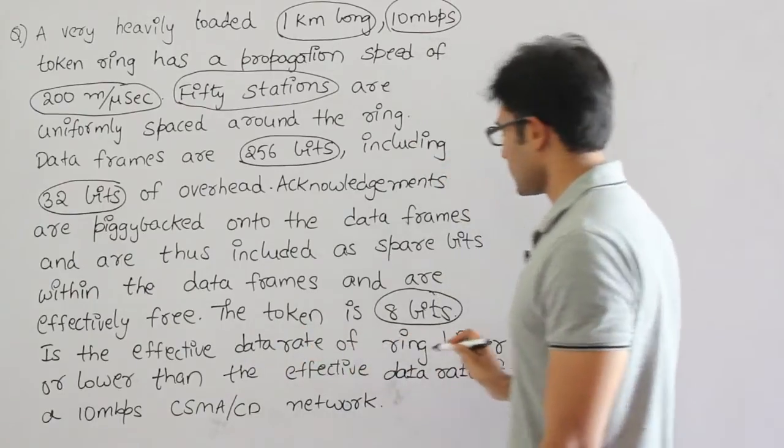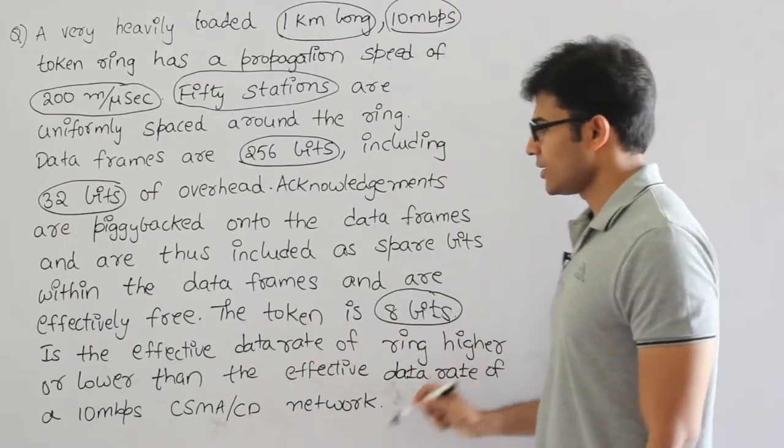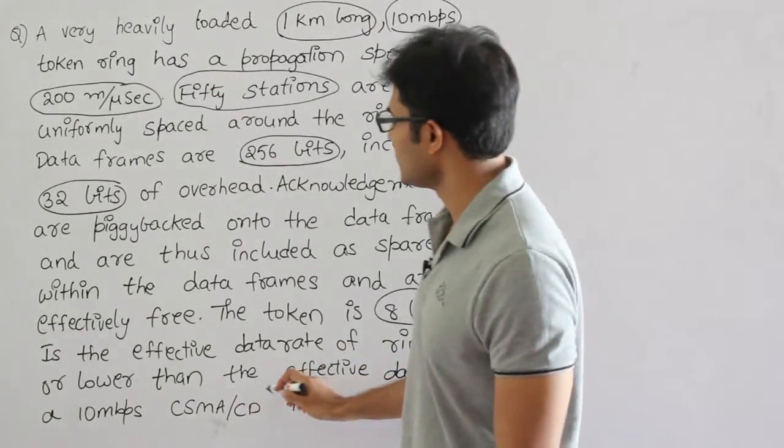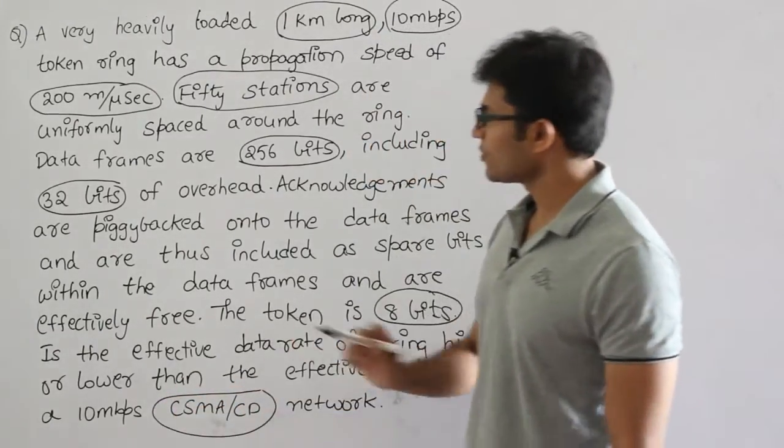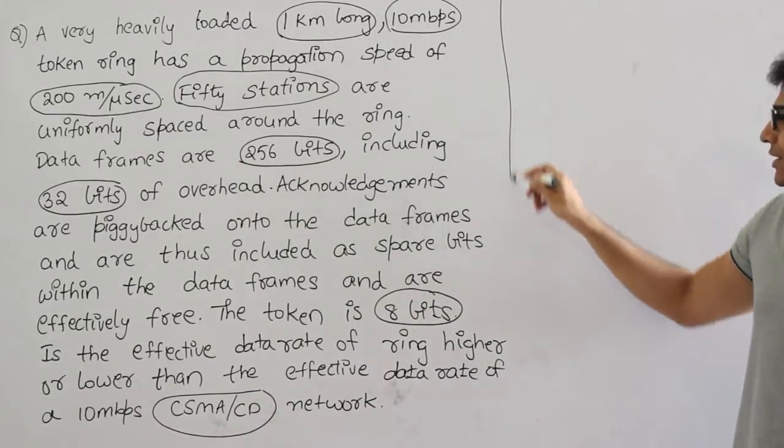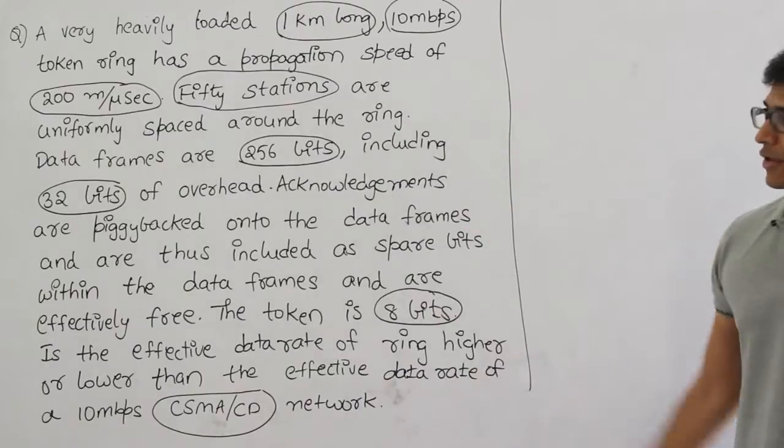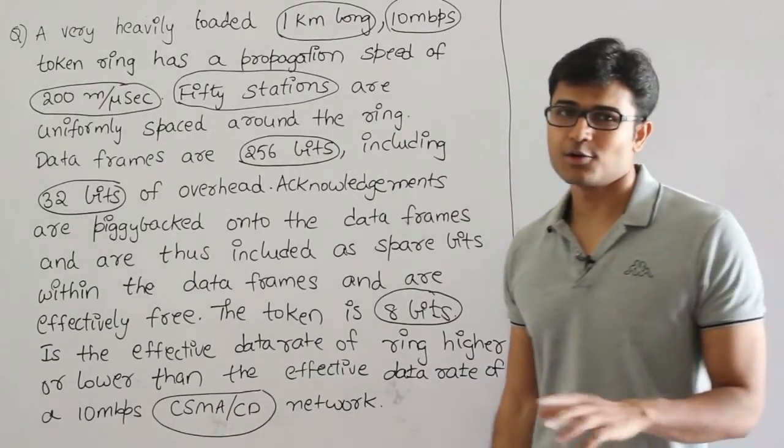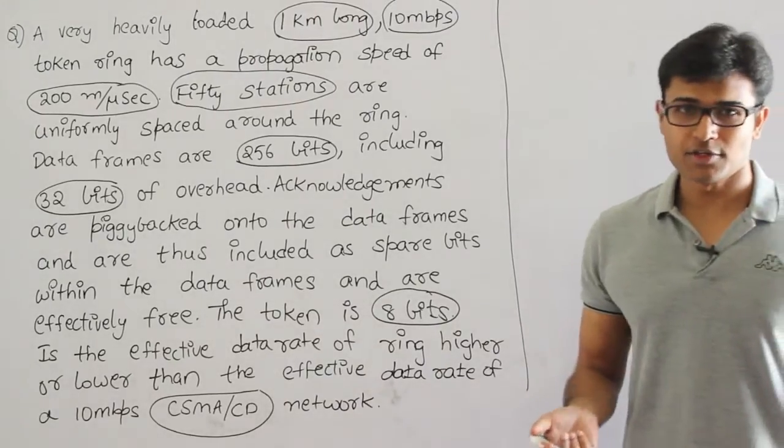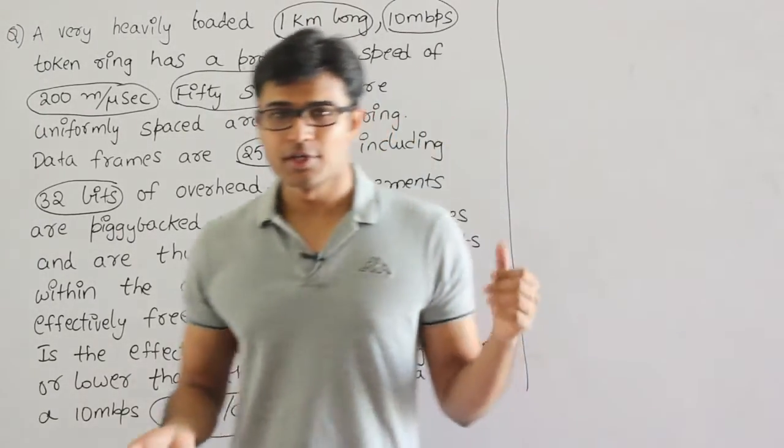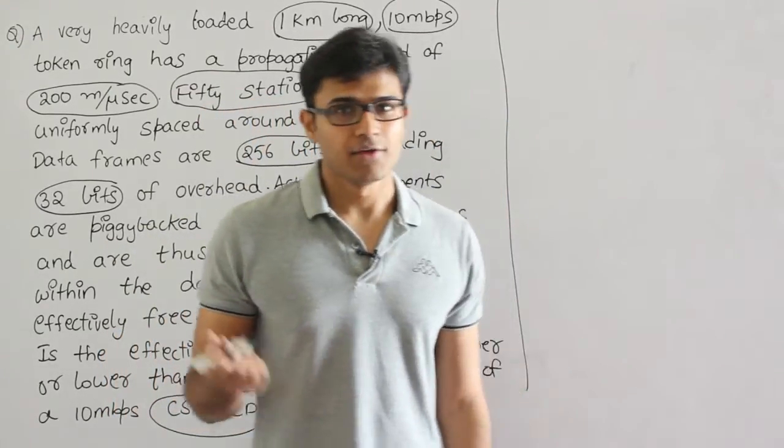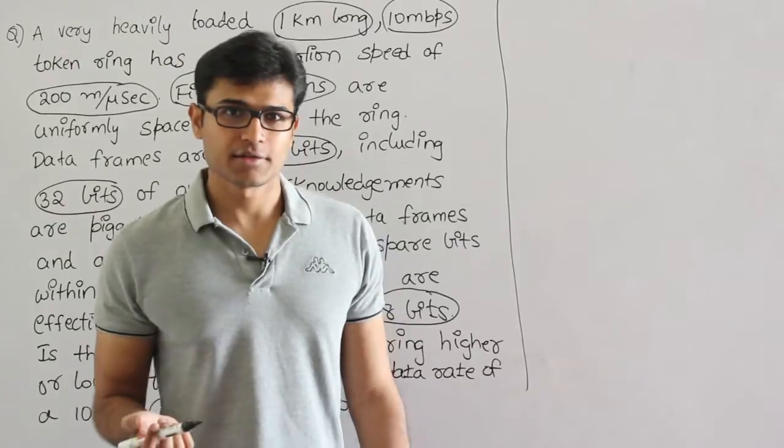The question is: Is the effective data rate of the ring higher or lower than the effective data rate of 10 Mbps CSMA/CD network? They wanted to compare Token Ring and Ethernet. One interesting thing is this entire data is not required to compare Ethernet and Token Ring. What they wanted to say is which one is giving better efficiency. Actually you need not do all this entire question. You need not do any numerical for this. You can directly look at the formulas and answer them.